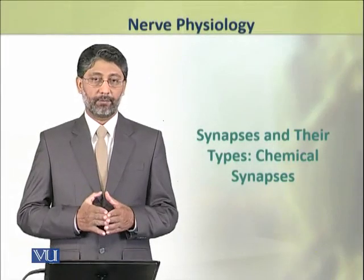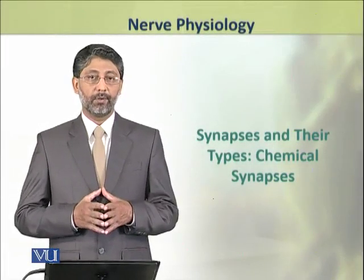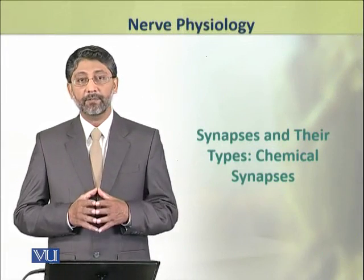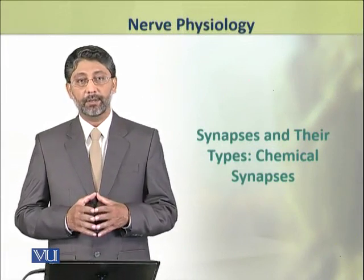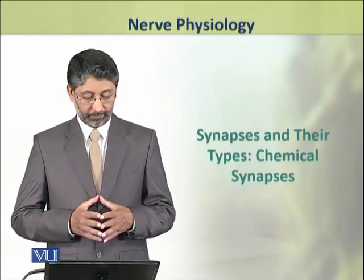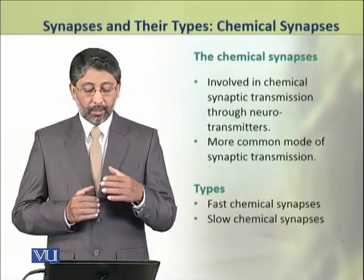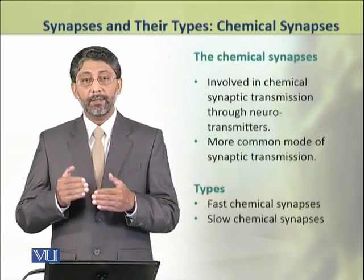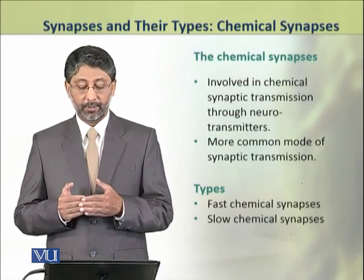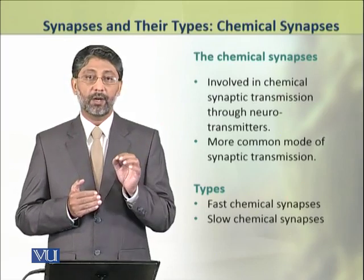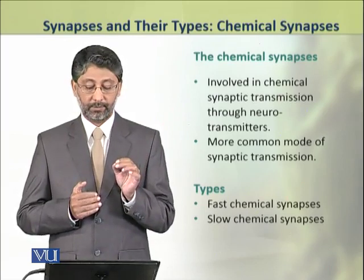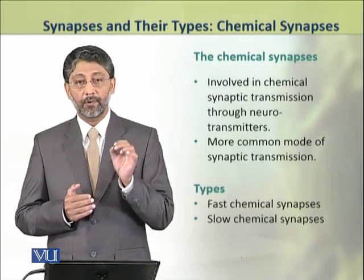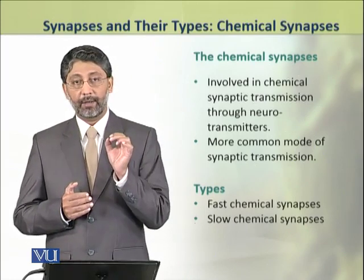In this module we shall discuss in detail the second type of synapses, which are the chemical synapses. Chemical synapses are involved in chemical synaptic transmission through the use of neurotransmitters. They are the most common form of synaptic transmission.